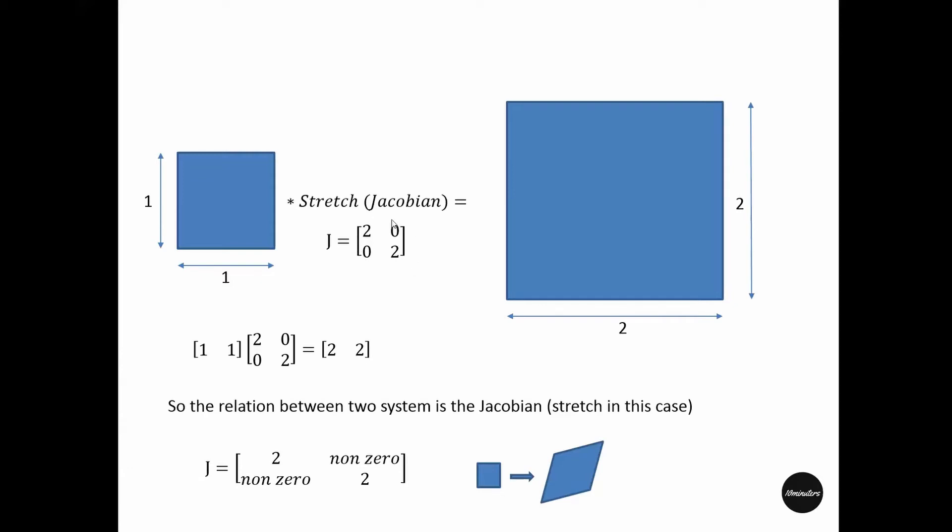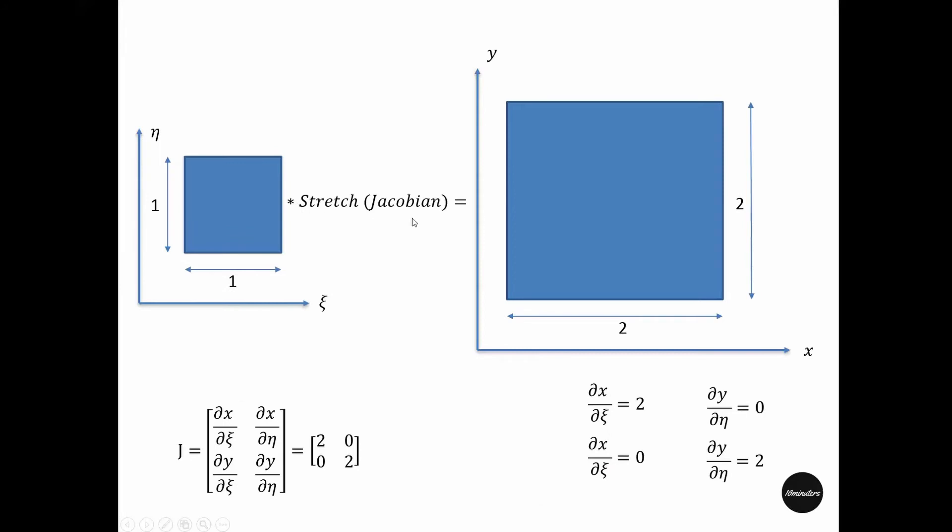This matrix works like the stiffness k in the one-dimensional case, and this is the Jacobian that transforms or stretches a square and makes the dimensions double. If we make the other diagonal components of the Jacobian non-zero, it will not only make the square double but will also have some shearing effect on the shape.